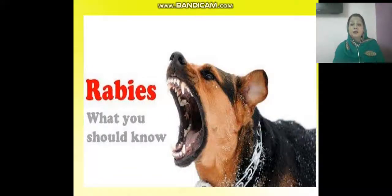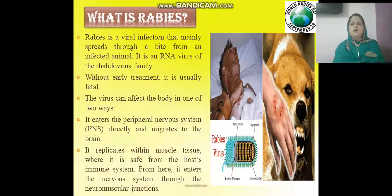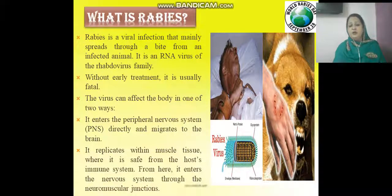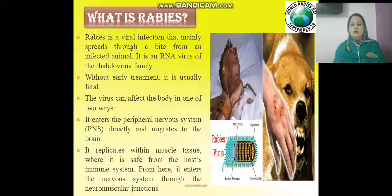Rabies is a viral infection mainly spread through the bite of infected animals — most commonly an infected dog. It is an RNA virus belonging to the Rhabdoviridae family and is fatal without treatment. The person bitten by a stray dog should consult a doctor immediately. The virus can infect the body in two ways: it either enters the peripheral nervous system and migrates directly to the brain, or it replicates within muscle tissues and then enters the nervous system through neuromuscular junctions.